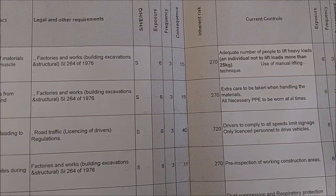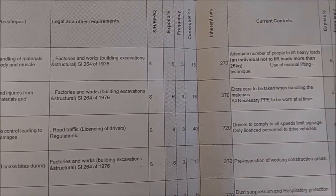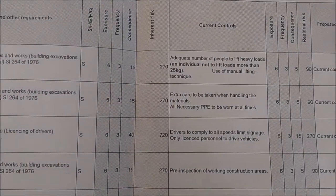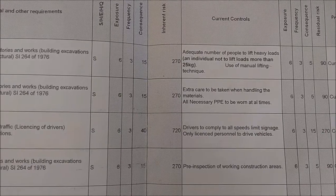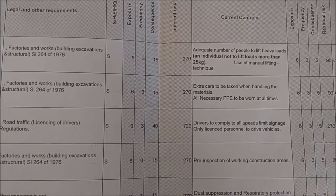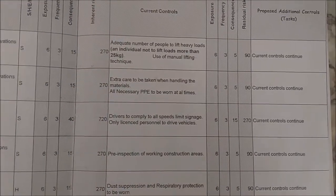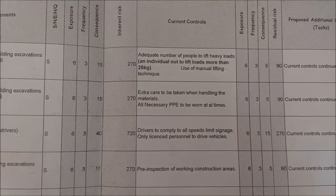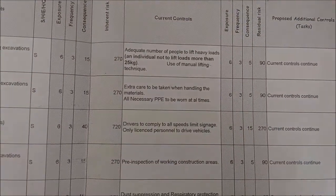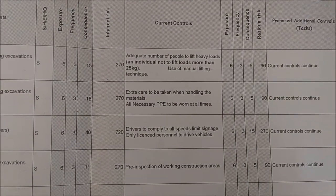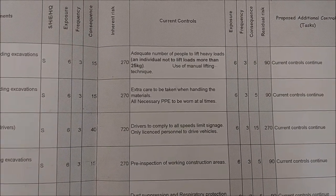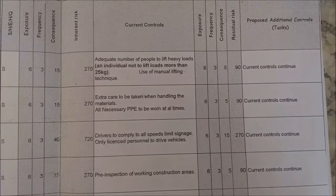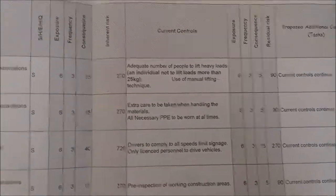The next columns cover exposure, frequency, and consequence, then the inherent risk — this is the risk that exists before any controls are put in place. When controls are put in place, the current controls column notes things like having an adequate number of people to lift heavy loads. Then another set of exposure, frequency, and consequence columns calculates the residual risk — the risk that remains after putting controls in place.